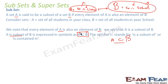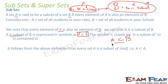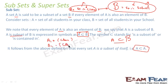We note that every set is a subset of itself. For example, if set A1 equals all members of your class and set A2 also equals all members of the class, then A1 is a subset of A2 because all elements in A1 are also in A2. So A is a subset of itself — this is an important rule.